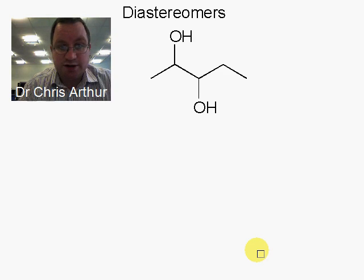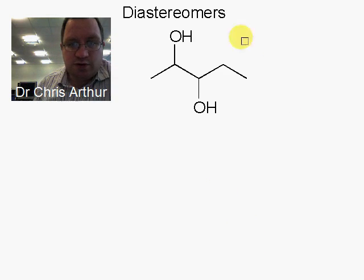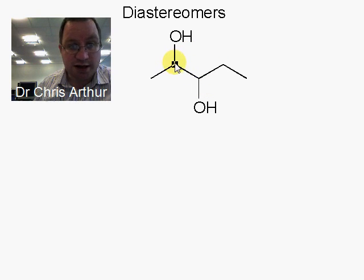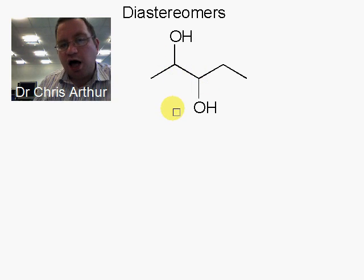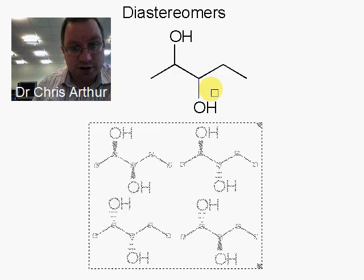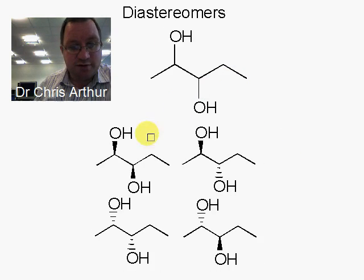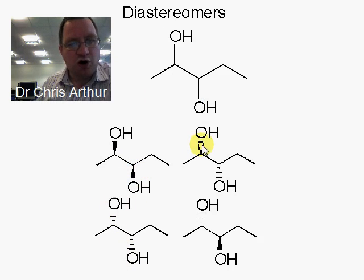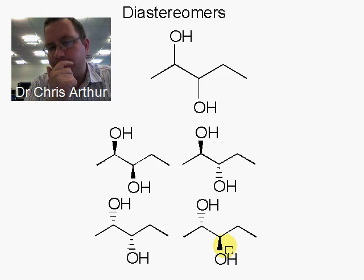The other place that you're likely to meet diastereomers is in molecules like this, where you have two or more asymmetric carbons — two chiral centers — and these groups can be arranged in different ways around them. For example, we can have these hydroxyl groups both coming out towards us, they could go behind the page, or one could come out and one could go backwards, and then we can get the other version of that as well.